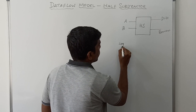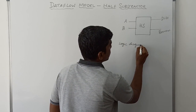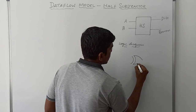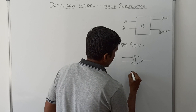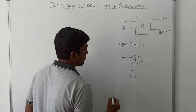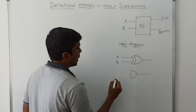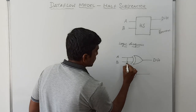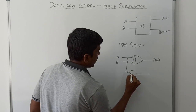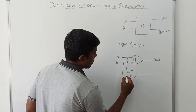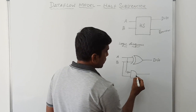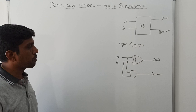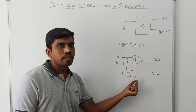Then I draw the logical diagram for the half subtractor. It has one XOR gate and one AND gate. The XOR gate inputs are A and B, and the output of the XOR gate denotes the difference. The NOT of A is given to one input of the AND gate, and B is given to the other input of the AND gate. The output of the AND gate represents the borrow.